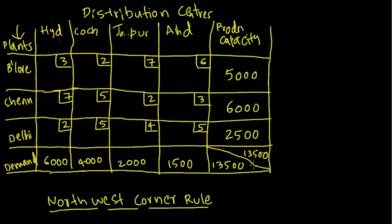We will see unbalanced transportation problems in future videos. Now, how to get the initial basic feasible solution using the Northwest corner rule is the purpose of this video. The Northwest corner rule, as the name suggests, first targets the northwest corner-most cell of the matrix.